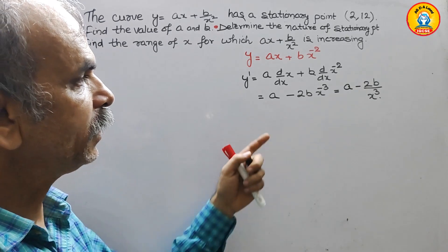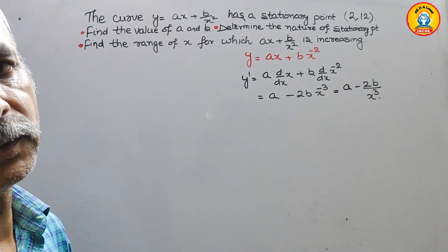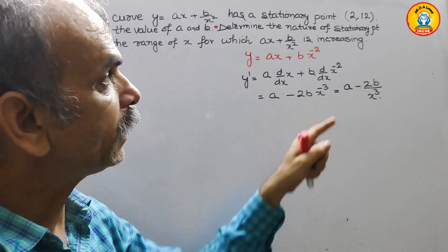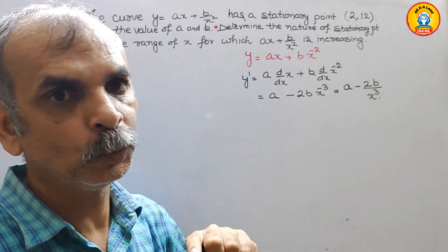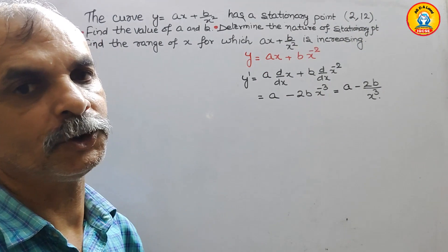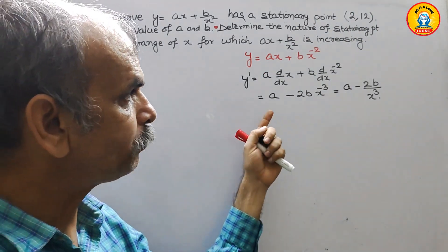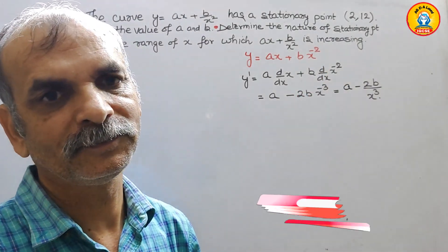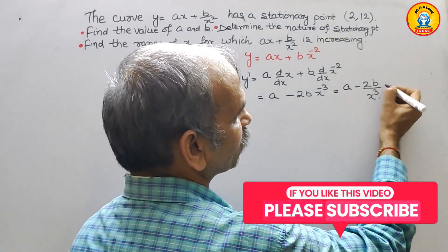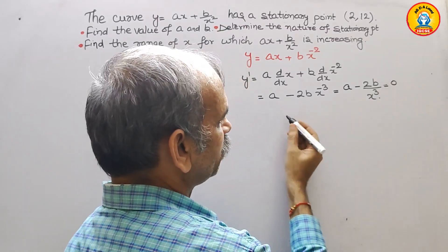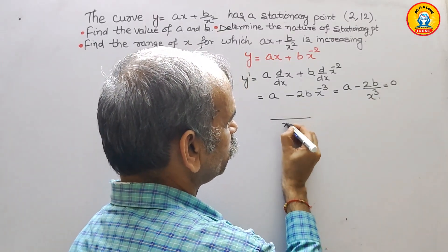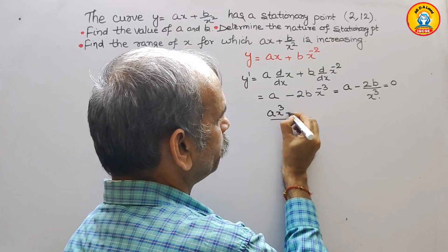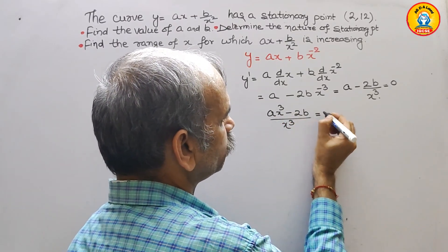Now, how we will get a and b. They have given the stationary point x equals 2, which we will substitute. At a stationary point, y dash equals 0. Taking LCM as x cubed, we get ax cubed minus 2b equals 0. Cross multiplying, x cubed cancels out.